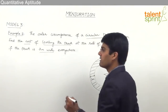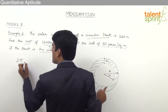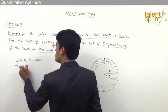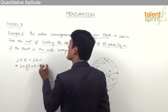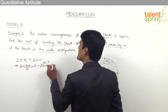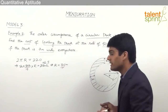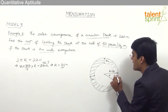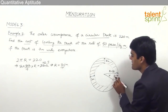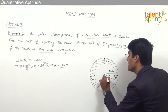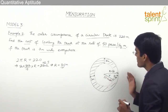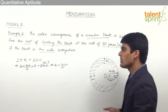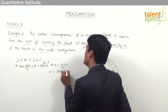The outer circumference is 220 meters. Using 2πR = 220, with π = 22/7, we get 2 × (22/7) × R = 220, which gives R = 35 meters. Since the track is 7 meters wide everywhere, the inner radius r = 35 - 7 = 28 meters. The distance between the outer and inner circumference is 7 meters, confirming the inner radius is 28 meters.